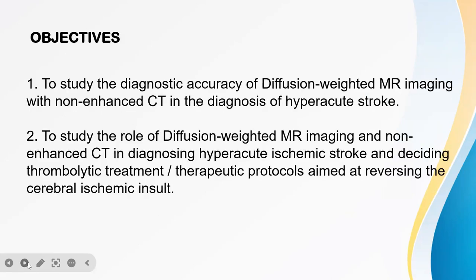The objectives of this study were to study the diagnostic accuracy of Diffusion-Weighted MR Imaging with non-enhanced CT in the diagnosis of hyperacute stroke, and to study the role of Diffusion-Weighted MR Imaging and non-enhanced CT in diagnosing hyperacute ischemic stroke and deciding thrombolytic treatment and therapeutic protocols aimed at reversing the cerebral ischemic insult.